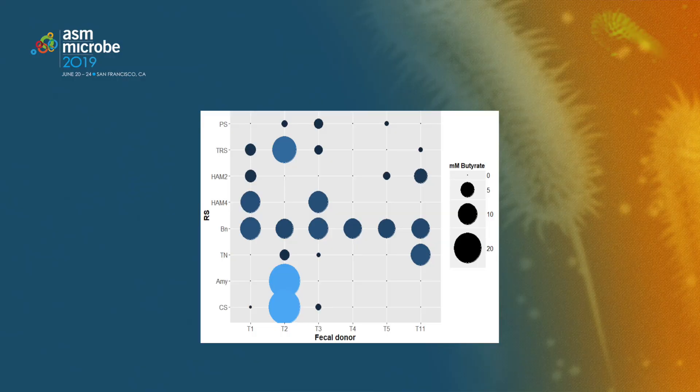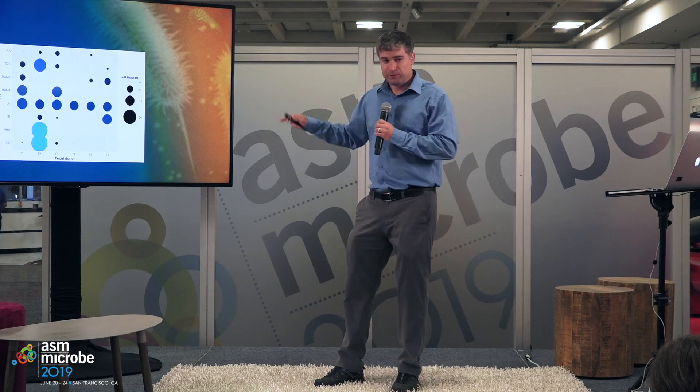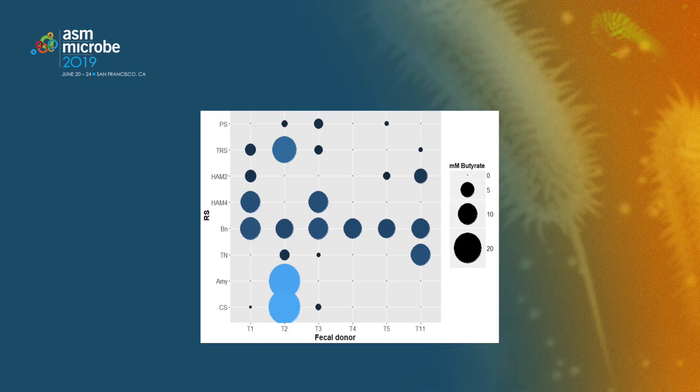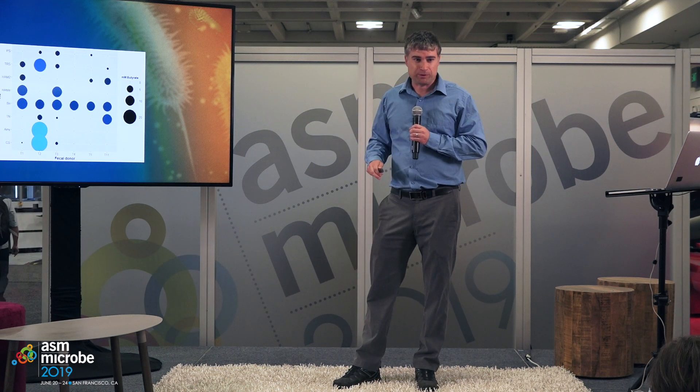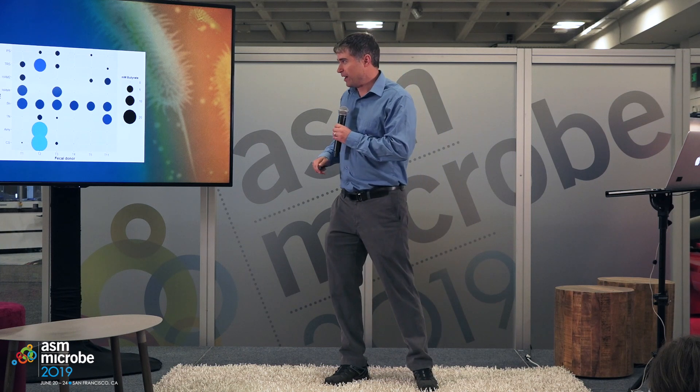We believe it has to do with what their microbiome looked like at the start. We've performed in vitro studies where we take fecal samples from a number of different people, do in vitro fermentations adding different types of resistant starch, and see what happens. The size of these dots shows how much butyrate increased during that fermentation. It's quite variable from person to person — each point along the x-axis is a different person. We've also replicated this in human clinical trials, so this is a phenomenon we do see in people.